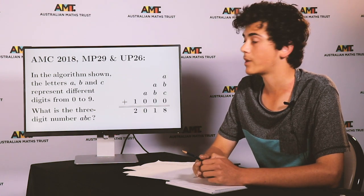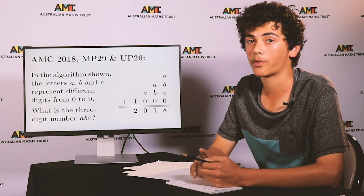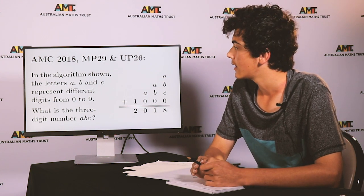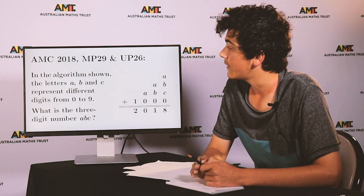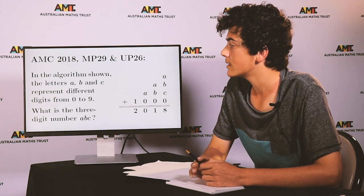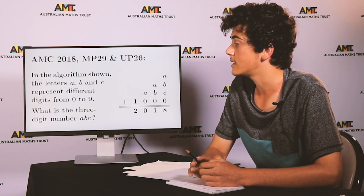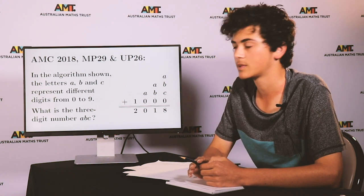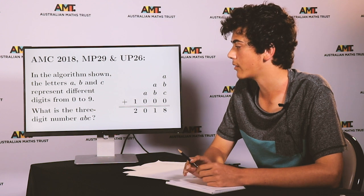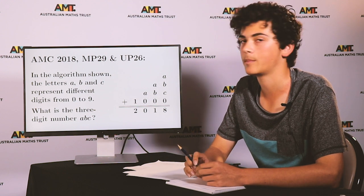The next one was in both the middle primary and upper primary competitions. In the algorithm shown, the letters A, B and C represent different digits from 0 to 9. What is the three-digit number ABC?